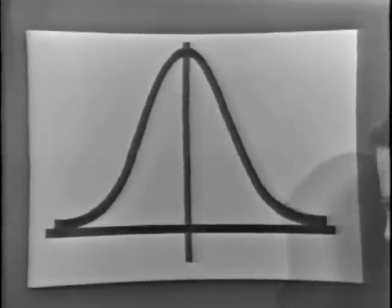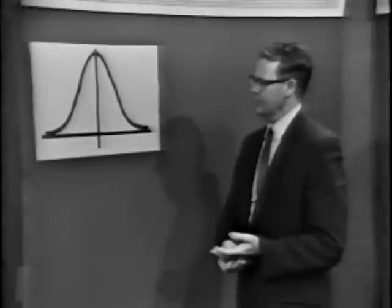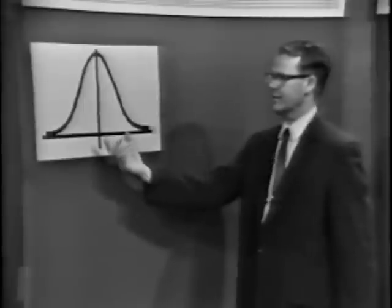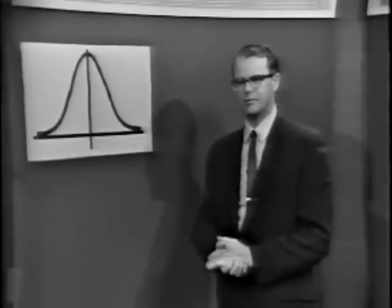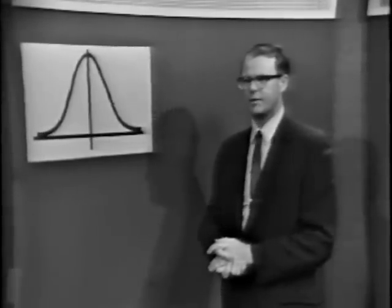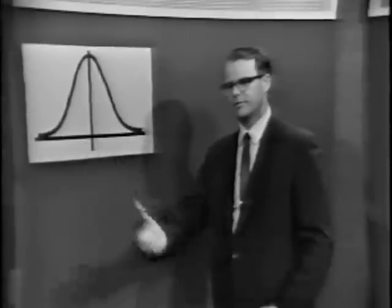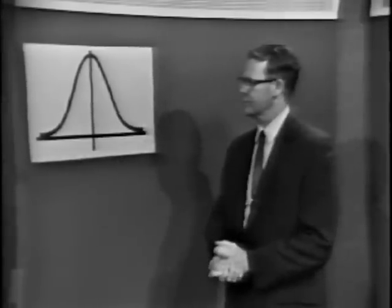We call it the normal distribution, but in fact it's doing it an injustice because it's the most unusual distribution. We'd be better off calling it the Gaussian distribution, in favor of Carl Friedrich Gauss — the gentleman who, in 1796, provided many of the mathematical arguments which give rise to the importance of this probability density function, the normal distribution.